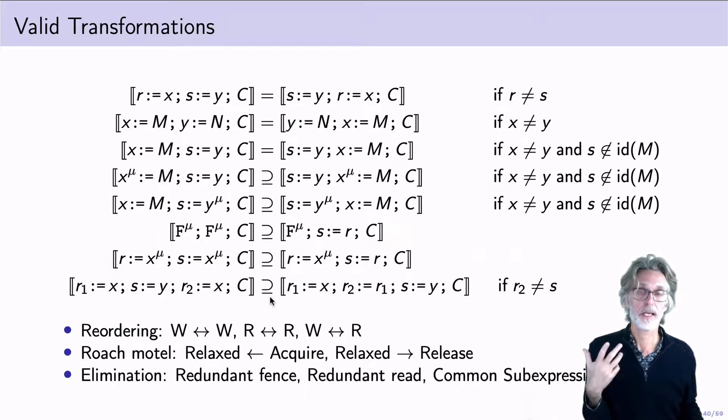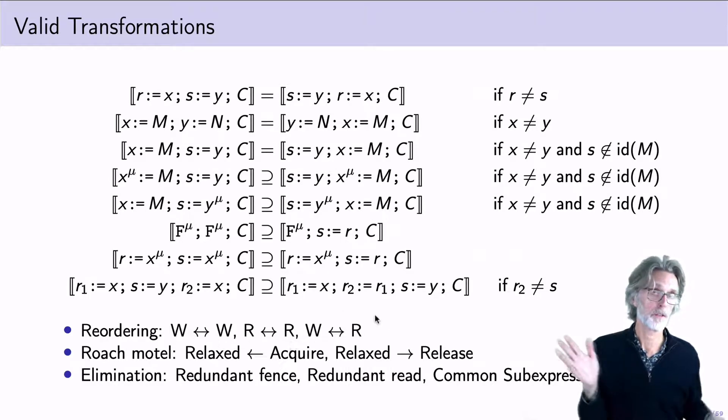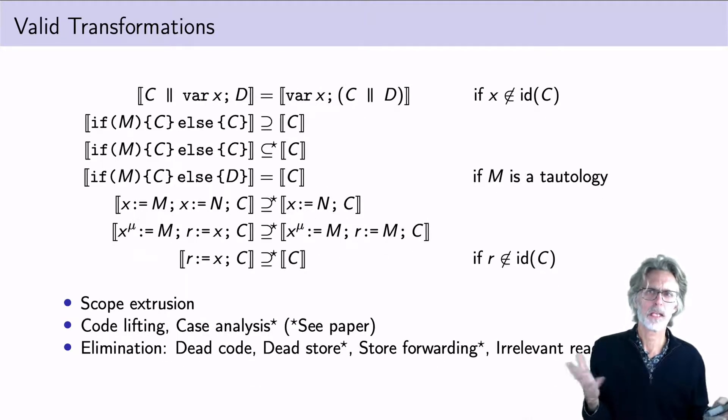The model validates many expected program transformations, including reordering of independent statements, roach motel, which allow things to go inside the scope of a synchronization, and various forms of elimination, such as redundant fences, redundant reads, common sub-expression elimination. And also we have scope extrusion, code lifting, case analysis, dead code elimination, dead store elimination, store forwarding, irrelevant read elimination. Some of these do require a little bit of extra work, which we discuss in the paper.